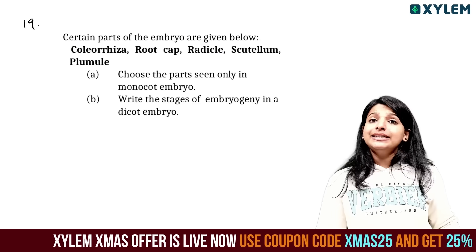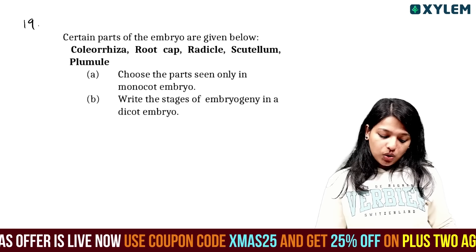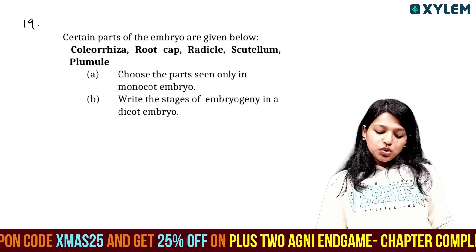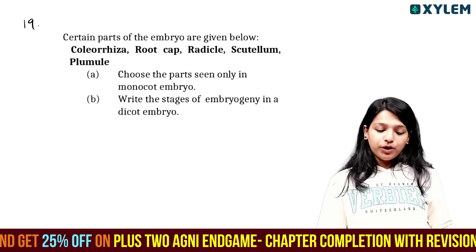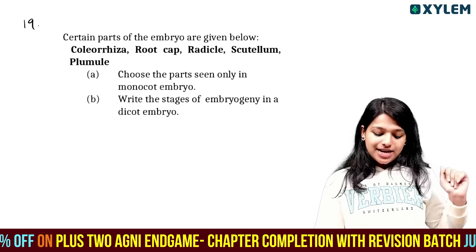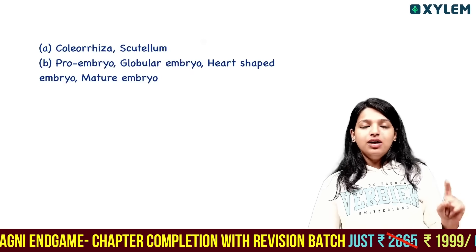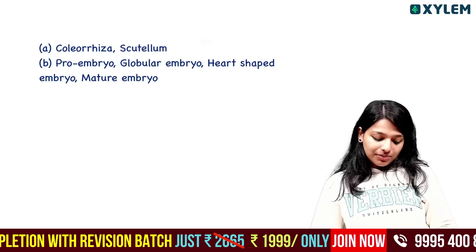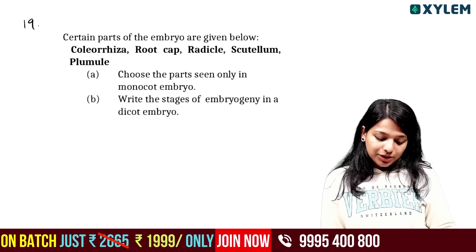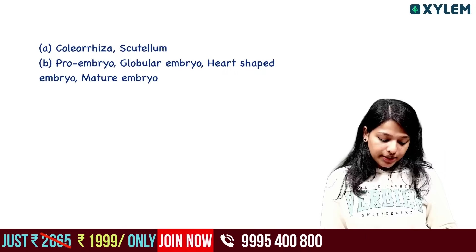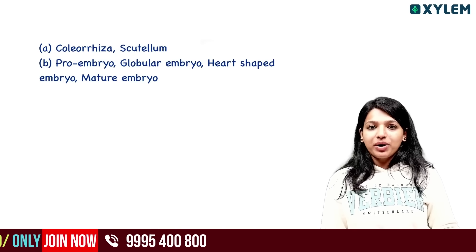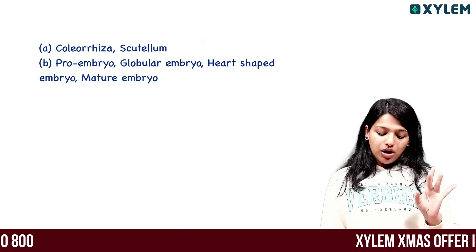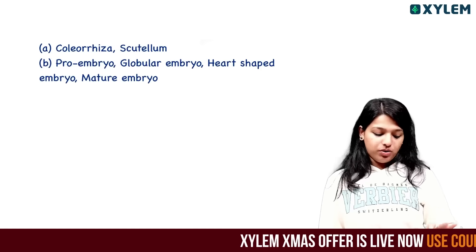Certain parts of embryos are given below: coleorhiza, root cap, radicle, coleoptile, plumule. Choose the parts seen only in monocot embryo. Write the stages of embryo development in dicots: globular stage, heart-shaped embryo, then mature embryo.